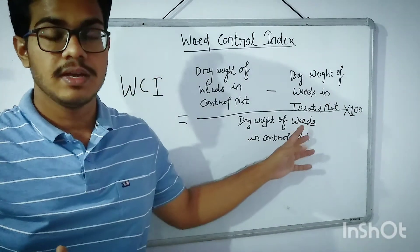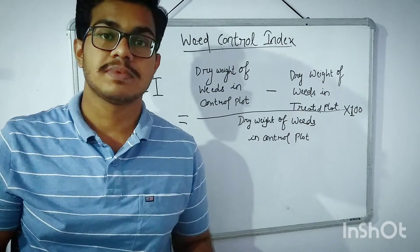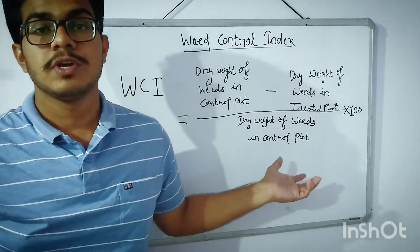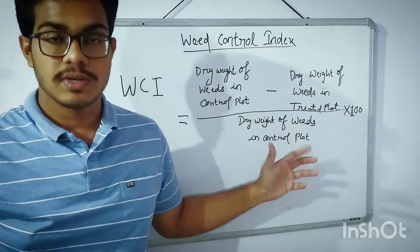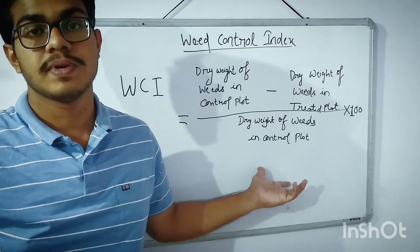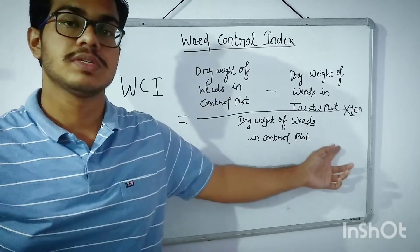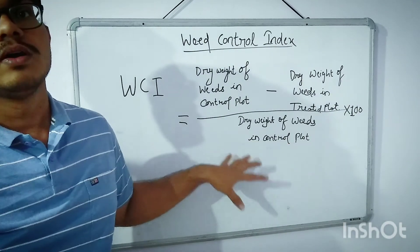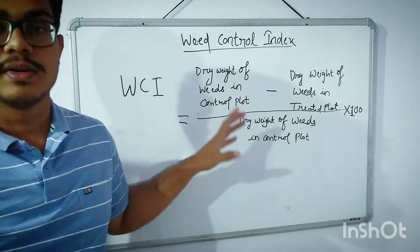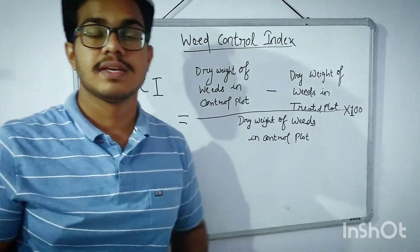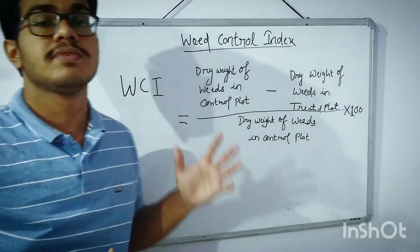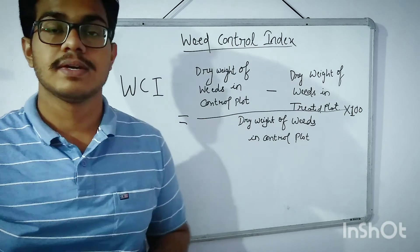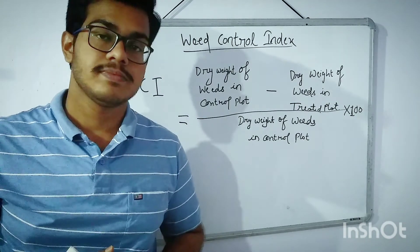We calculate the dry weight of weeds in the control plot and the treated plot, subtract them, divide by the dry weight obtained from the control plot, and multiply by 100. This percentage of dry weight gives us the weed control index value for a particular weed population or field.